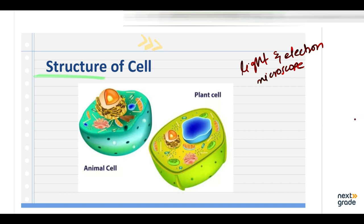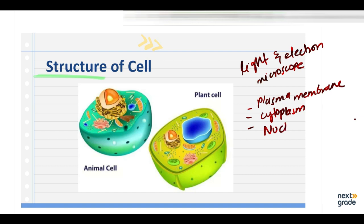All cells have three major basic components. The first one is the plasma membrane, or a cell wall in plants. The second is the cytoplasm containing all of the cellular organelles. The third one is the nucleus, which contains the chromatin material — that is, DNA and protein.